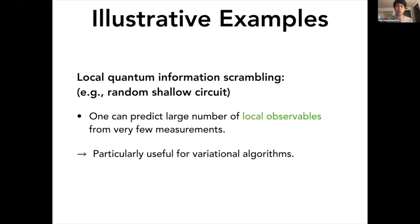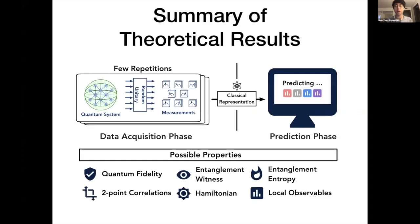Another important example is based on local quantum information scrambling, where you don't allow all the qubits to talk to each other, but you just apply a random shallow circuit, so that it's locally scrambled. In that case, you could predict a large number of local observables. This would be particularly useful for variational algorithms such as VQE, Variational Quantum Eigensolver, or Variational Quantum Simulation, etc.